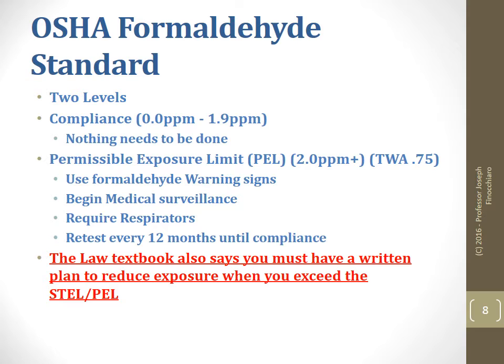Be aware — do not round numbers; use the number you're given. When we violate our permissible exposure limit, whether it's 2.0 for the 15-minute test or 0.75 for the 8-hour test, we have to put up the signs, begin surveillance, and provide respirators. Now comes the trick: if you are just in violation of the short-term test, you must retest within 12 months. And don't forget that written plan — that's also required. The retest for the short-term exposure limit, if it is in violation at 2.0 or higher, is within 12 months.